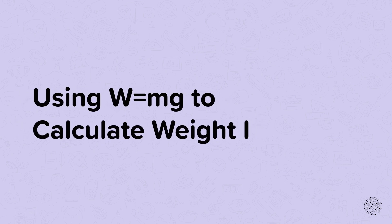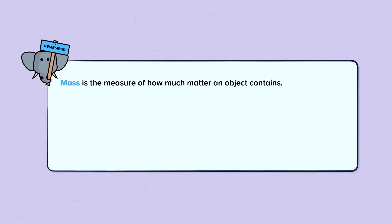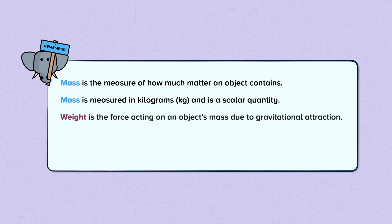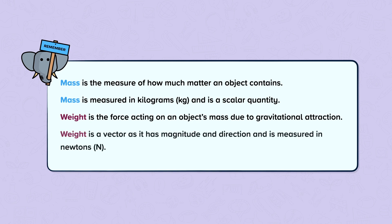Using W equals mg to calculate weight, part 1. Remember, mass is the measure of how much matter an object contains. Mass is measured in kilograms and is a scalar quantity. Weight is the force acting on an object's mass due to gravitational attraction. Weight is a vector as it has magnitude and direction, and is measured in newtons.